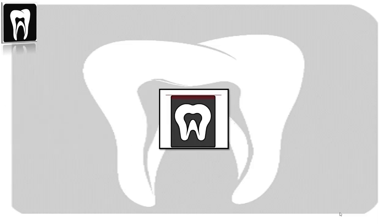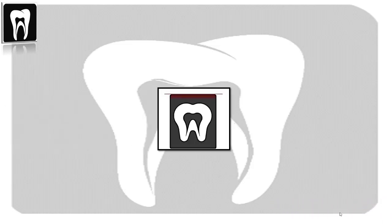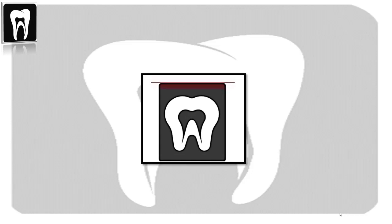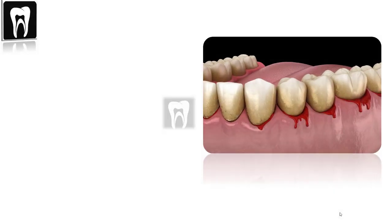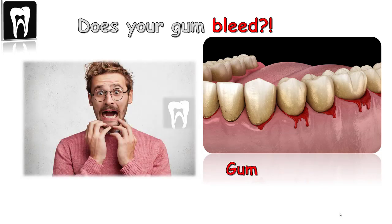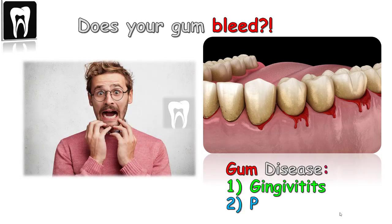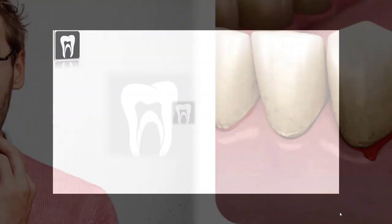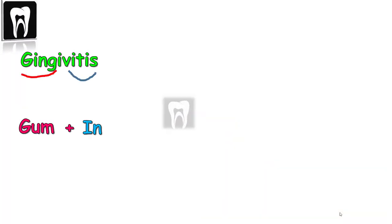Hi everyone, I'm Farida and welcome back to my channel. Have you ever experienced gum bleeding? Bleeding gums are the first sign that gum disease — including gingivitis and periodontitis — is on its way. What are they? Gingivitis: 'gingiva' stands for gum, 'itis' means inflammation — it's the inflammation in the gums.